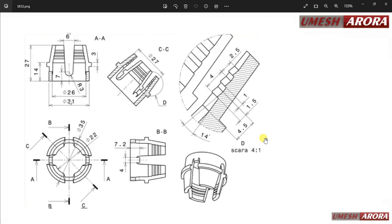Hello friends, this is Umesh and today we will create this model in NX. I have one top view, one front view, and one section view from CC. This is the CC view so we can see this portion. D is a detail view, and we need this kind of shape on the inside wall. One more section is here — this is BB, which is cutting from here.